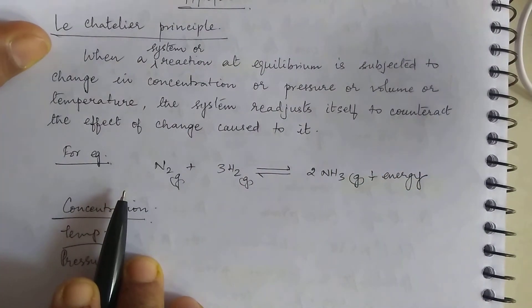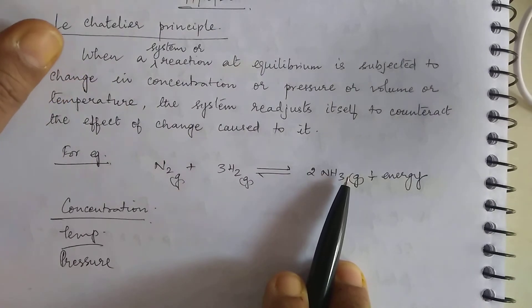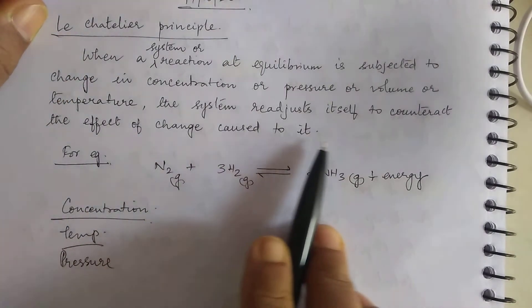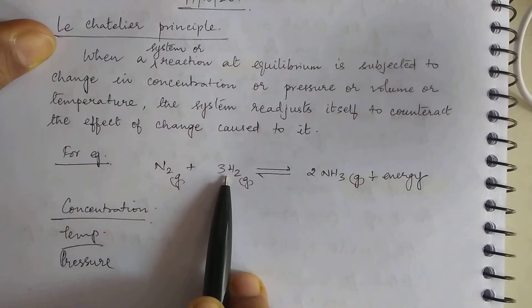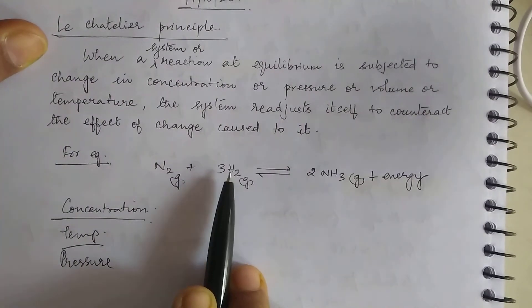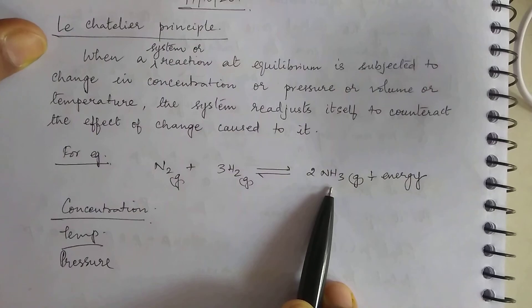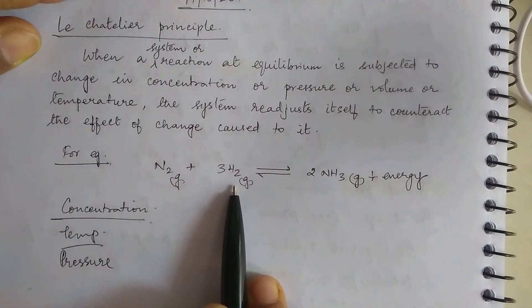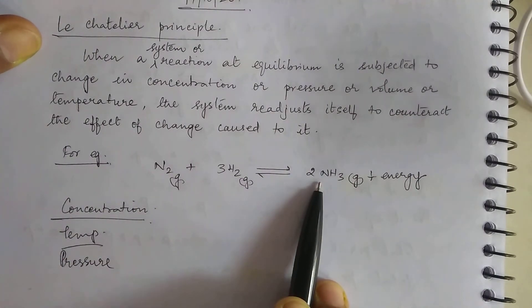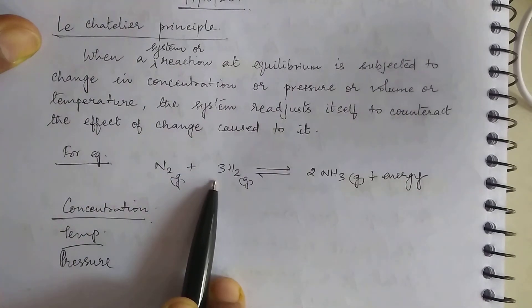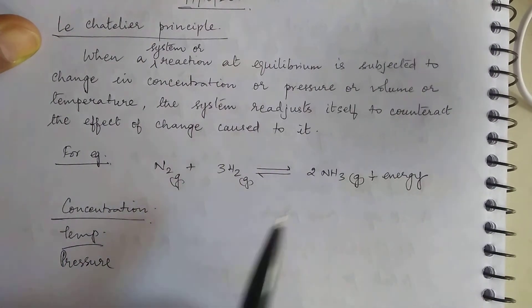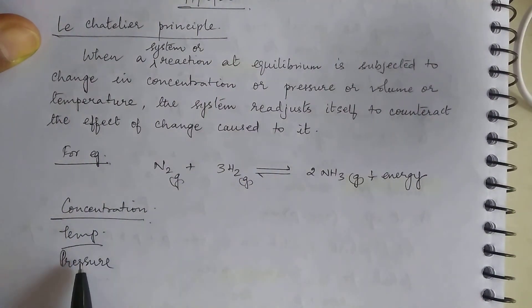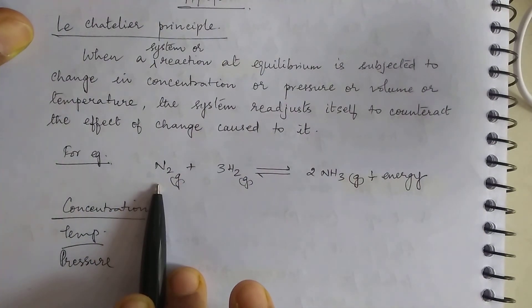Now consider pressure. All three species are in the same closed container. If I increase the pressure, nitrogen and hydrogen collide more frequently and form ammonia. Increase in pressure shifts equilibrium toward the side with fewer moles — the product side has 2 moles, while the reactant side has 4 moles (1 + 3). So increased pressure shifts equilibrium in the forward direction, and decreased pressure shifts it in the backward direction.